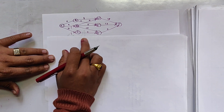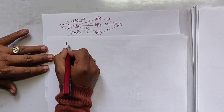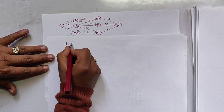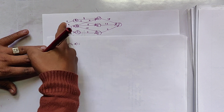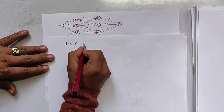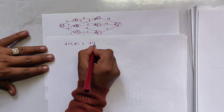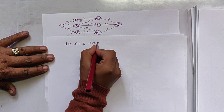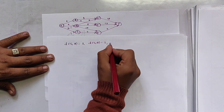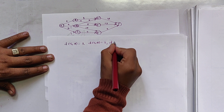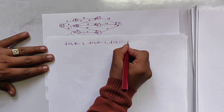Now in the backward approach we directly calculate: d(s,a) = 1, d(s,b) = 2, and d(s,c) = 5.